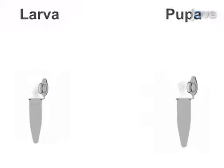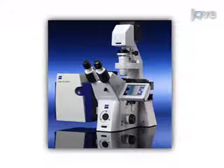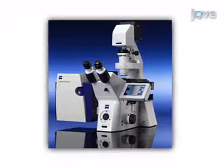After dissection of the larvae or pupae, they are fixed for immunostaining. Next, the fixed larvae or pupae are immunostained with the appropriate antibodies.